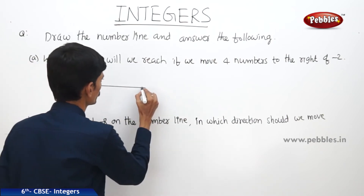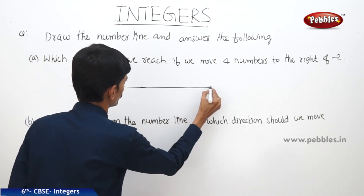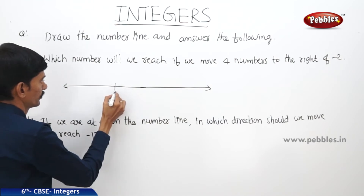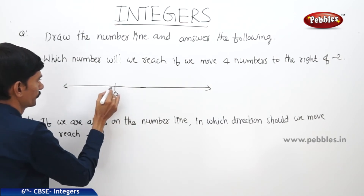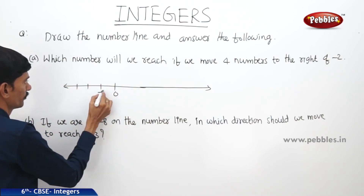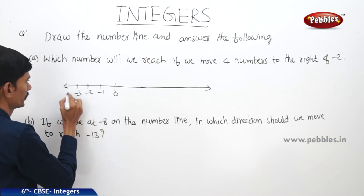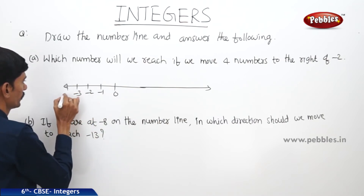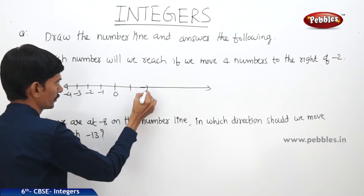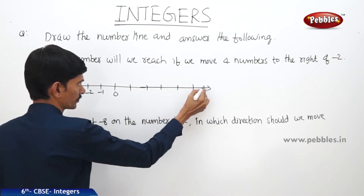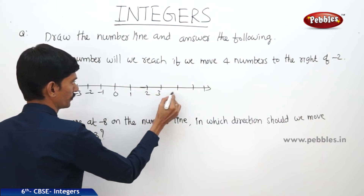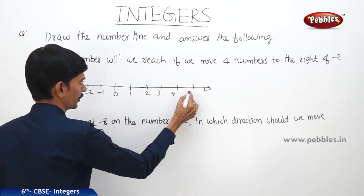Let us draw the number line. To the left of 0 we take the negative integers: minus 1, minus 2, minus 3, minus 4. To the right of 0 we take the positive integers: 1, 2, 3, 4, 5, 6.